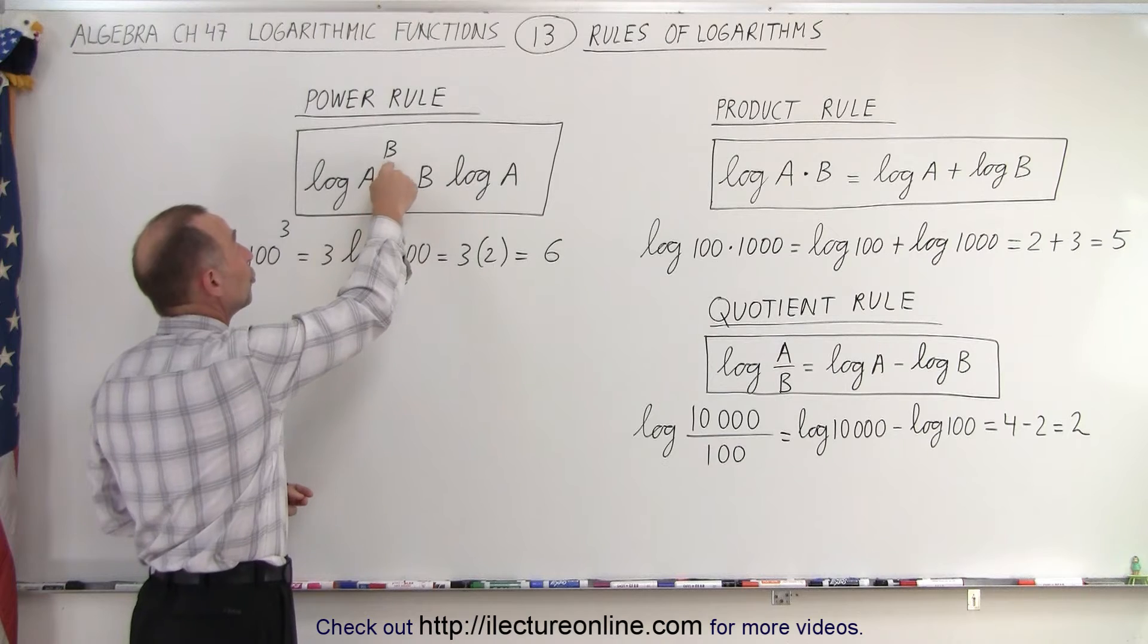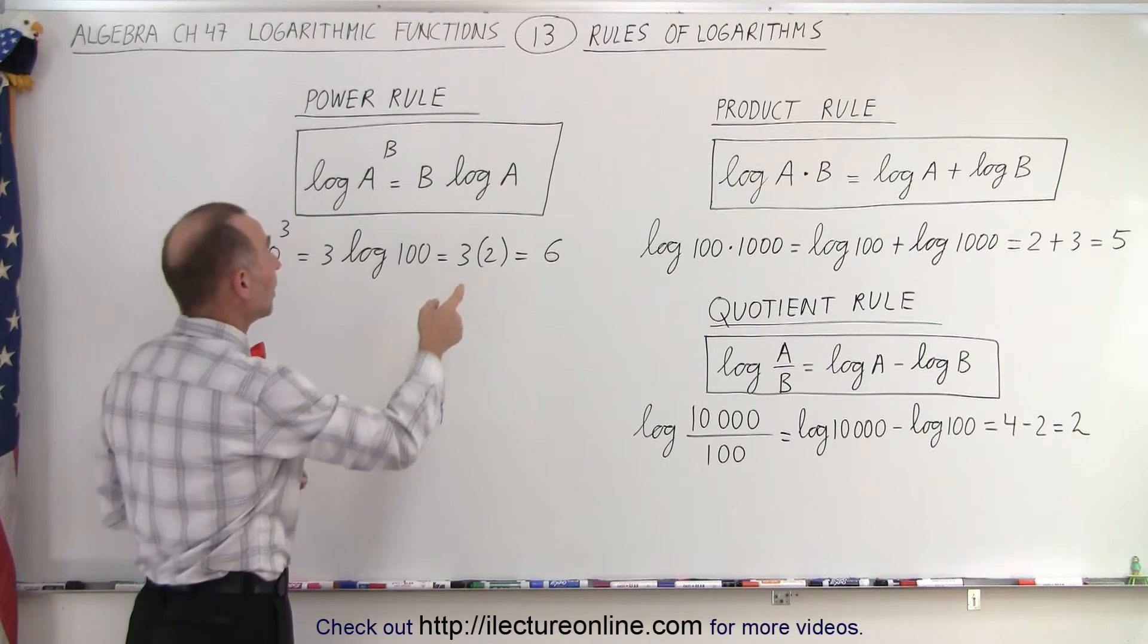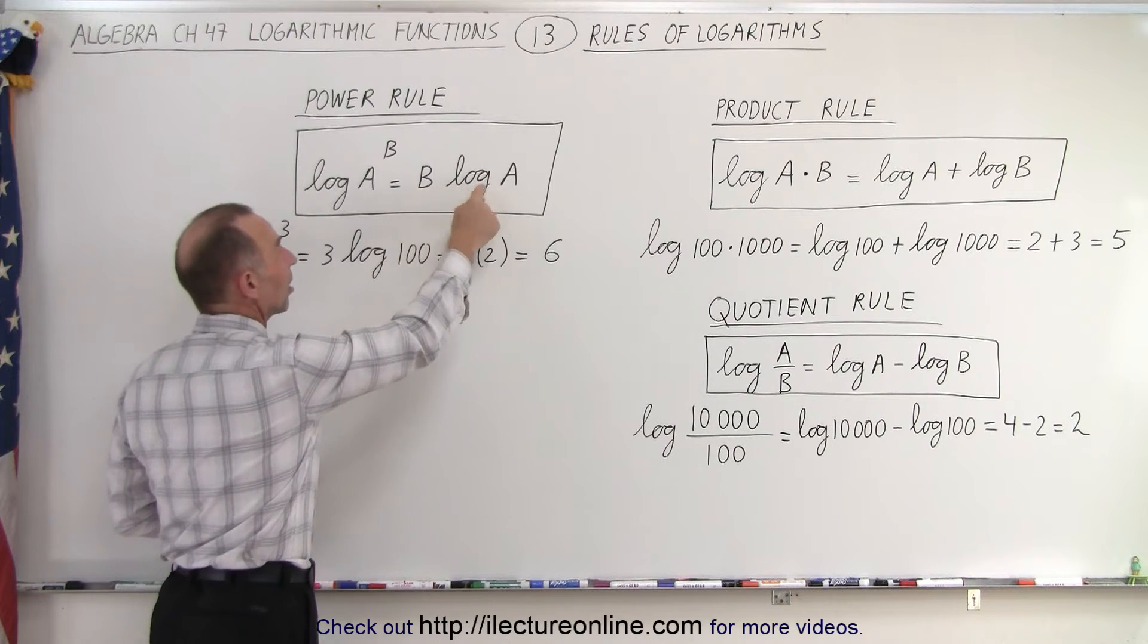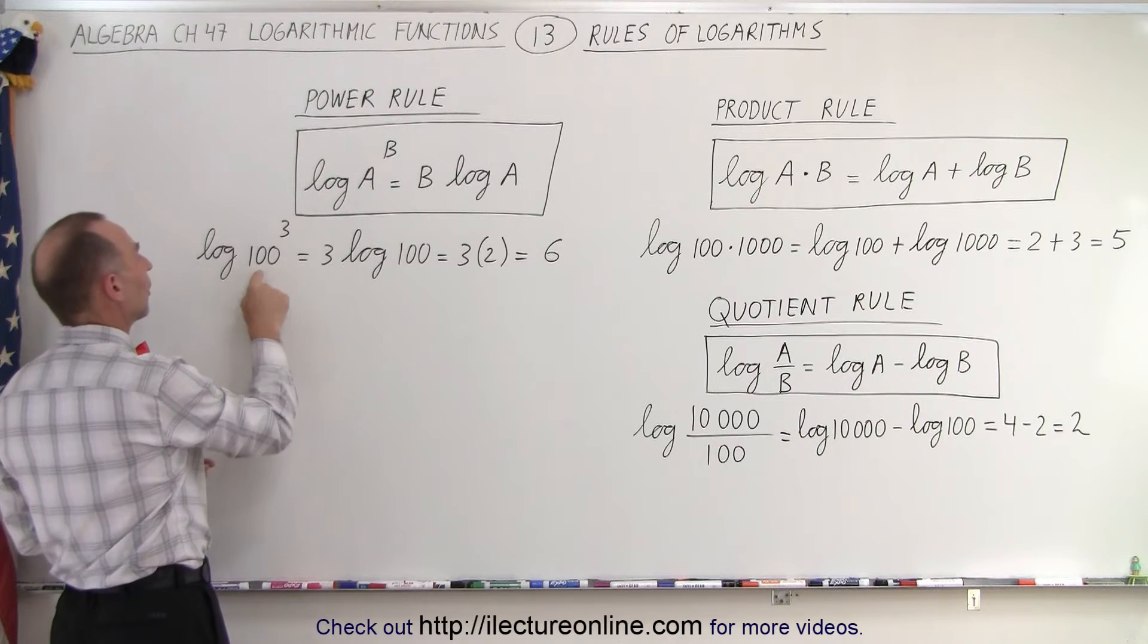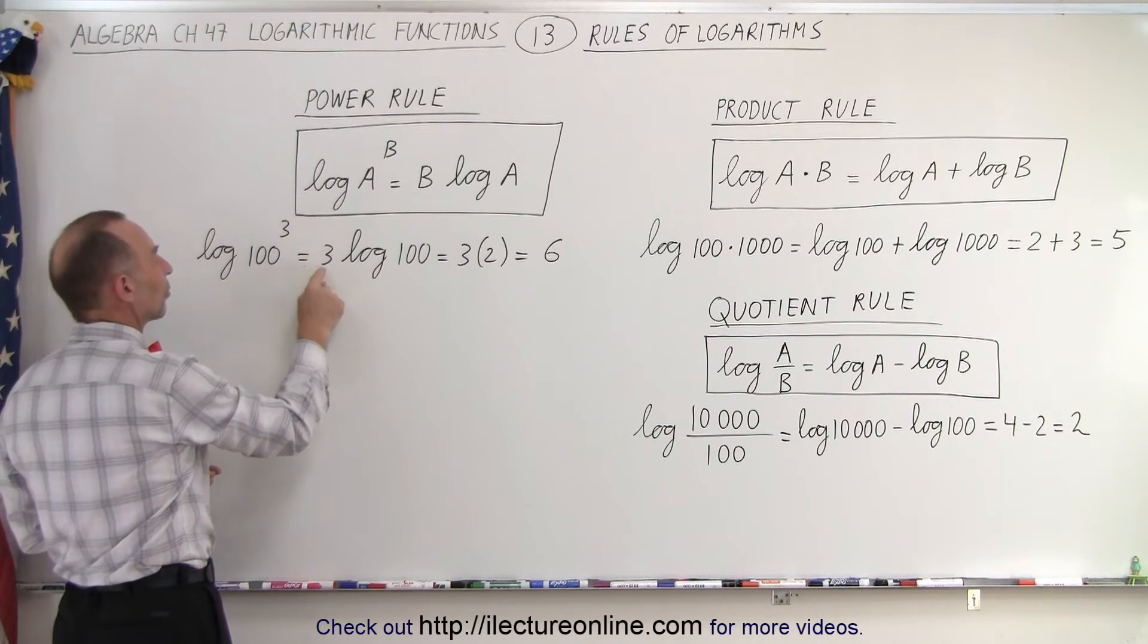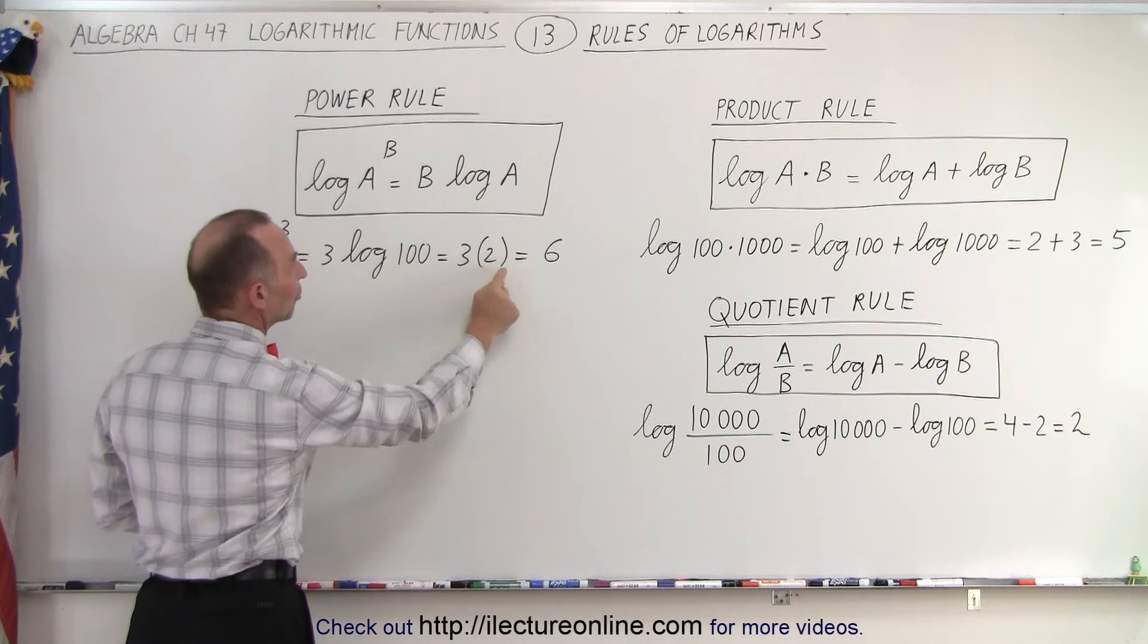Let's say you had log of A to the 2.5 power. Well, without calculators, that was hard to do. But then you could simply go 2.5 times the log of A, which was a lot easier to work with. And here's an example, the log of 100 to the third power is equal to 3 times the log of 100. Well, the log of 100 is 2, so 3 times 2 is 6.